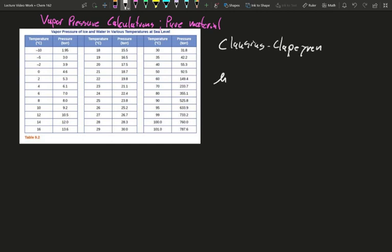This says that the natural log of your pressure 2 over pressure 1 is going to be equal to the delta H of vaporization over R. That will be a negative delta H of vaporization for pressure 2 over pressure 1. All this is times 1 over temp 2 minus 1 over temp 1.